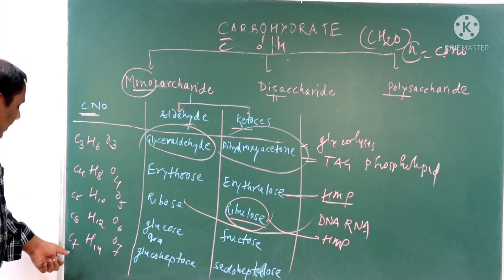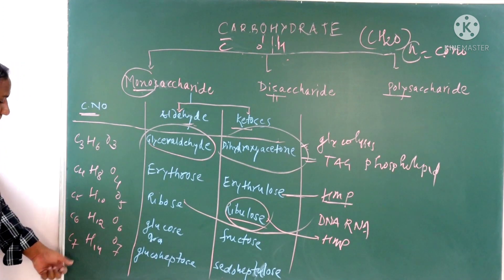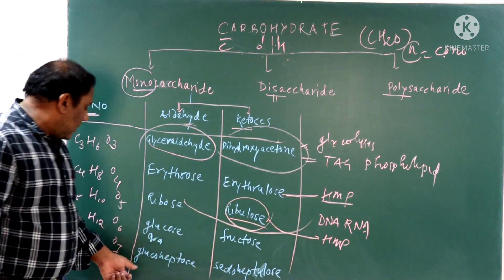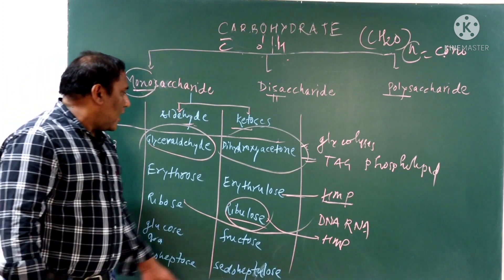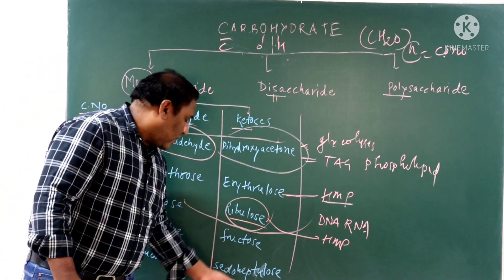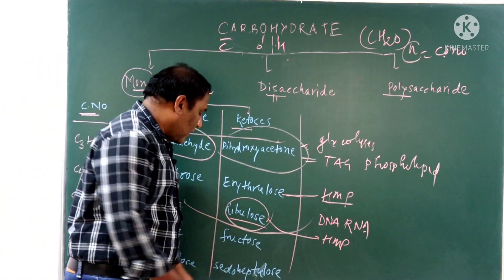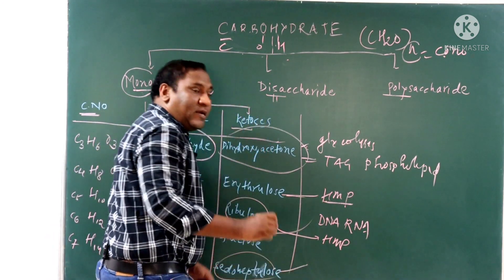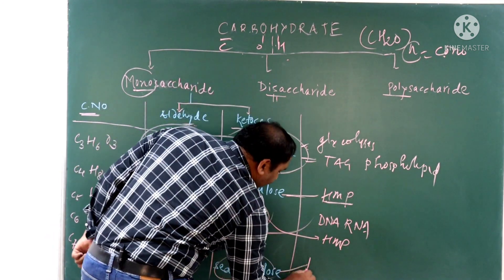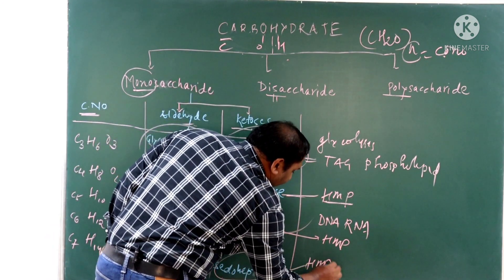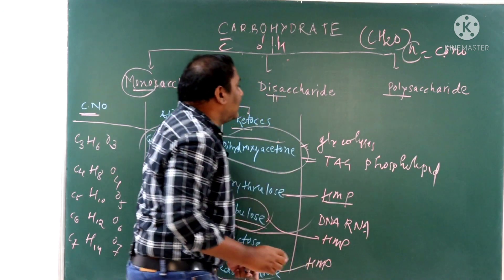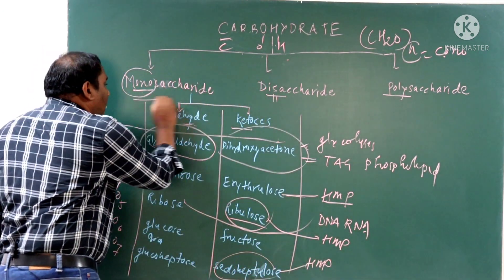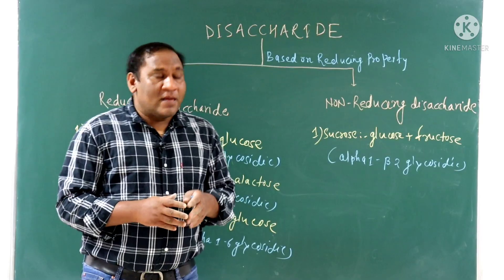If carbon number is seven (heptose), the aldehyde group form is known as glucoheptose, and the ketose functional group form is sedoheptulose. Sedoheptulose is also an intermediate substance in the HMP pathway. This completes the overview of monosaccharides.